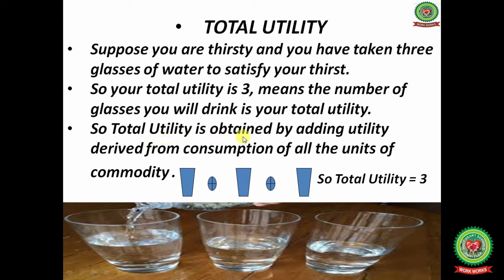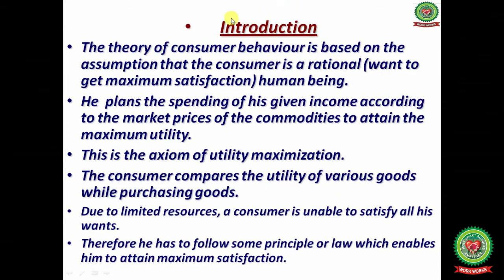From the consumption of the third idli, total utility is 38. We derive marginal utility as current minus previous: 38 minus 32 equals 6 utils. So with the consumption of the third idli, your satisfaction increased by 6 utils. In this way you can calculate marginal utility and total utility.